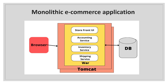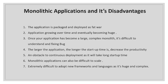In a monolithic application, every functionality is bound into a single unit. For example, in a monolithic e-commerce application, we have an accounting service, an inventory service, and a shipping service. The entire functionality is developed into a single unit, exported as a WAR file, and deployed to application servers. A single database is shared, and every functionality connects to it to fetch data.